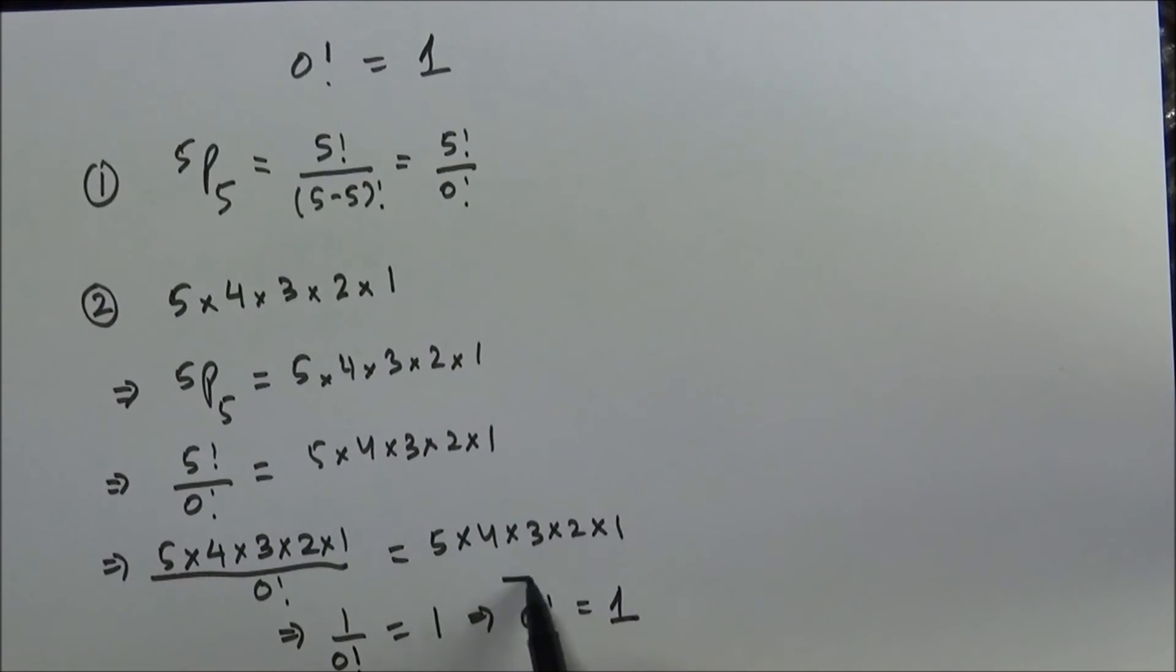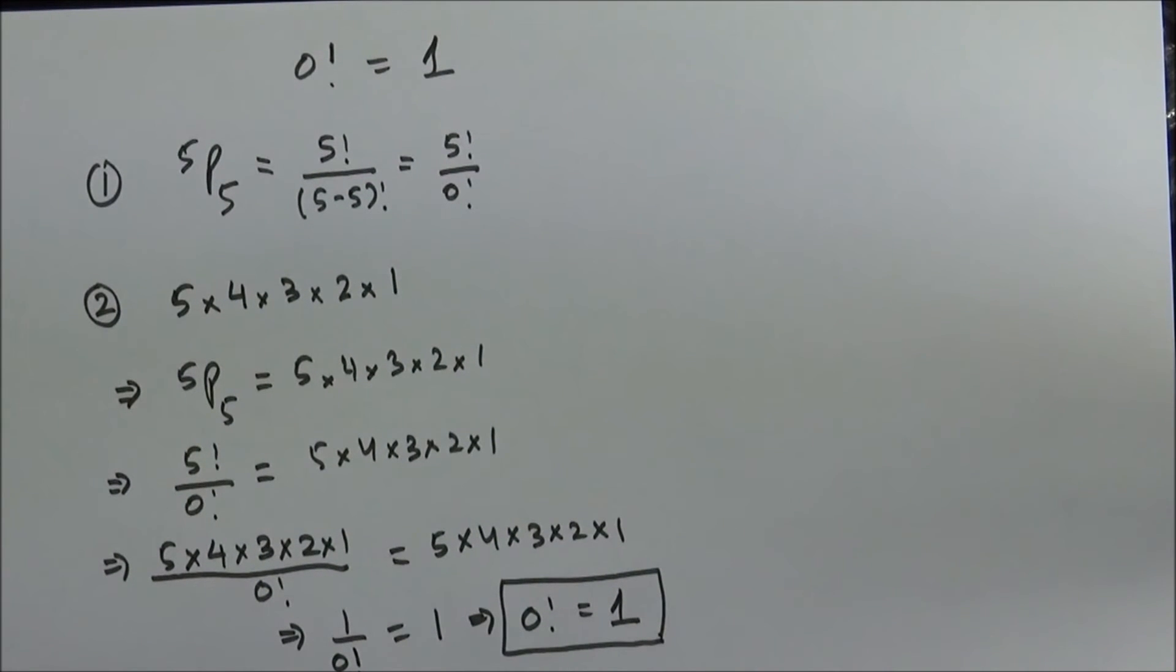We can generalize it by taking n number of distinct items, and the result in each case will be 1. Therefore, 0 factorial is 1. We hope that with this short clip you have understood the meaning of why 0 factorial is 1.